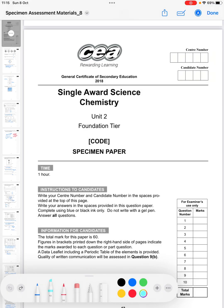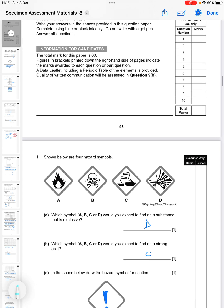Hi, this time we're going to look at the single award science chemistry paper for CCEA single award, so that's a unit 2 paper. This is just a talk through of the answers to the specimen paper that CCEA provided. The time for the paper is one hour, the total number of marks is 60, so let's have a look.